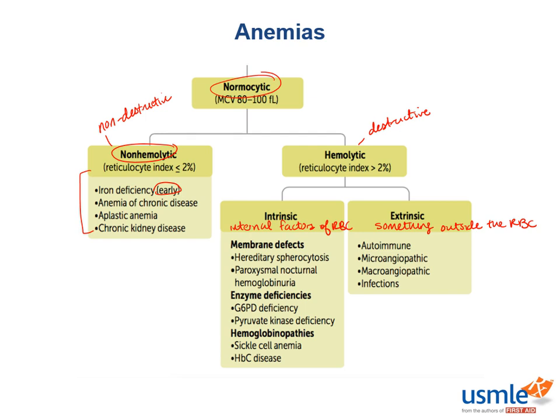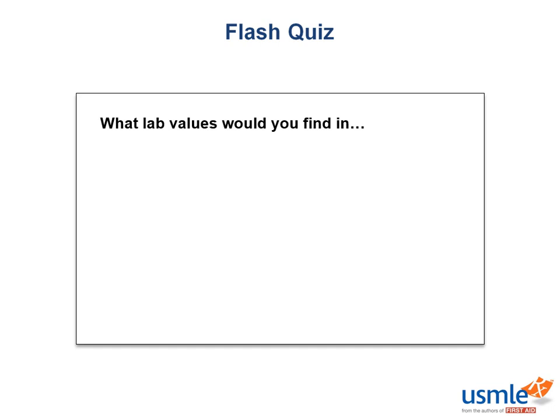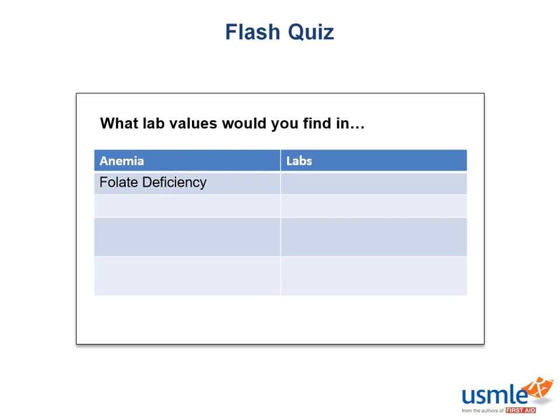Let's end this video with a flash quiz — let's figure out what lab values we can attribute to different types of anemia. For folate deficiency, you'd have a low hemoglobin, a low hematocrit, and an MCV greater than 100. For beta thalassemia, that's a low hemoglobin, a low hematocrit, and an MCV less than 80. This is because folate deficiency is a macrocytic anemia and beta thalassemia is a microcytic anemia. And how would you subcategorize folate deficiency? That's right — it's a megaloblastic anemia.